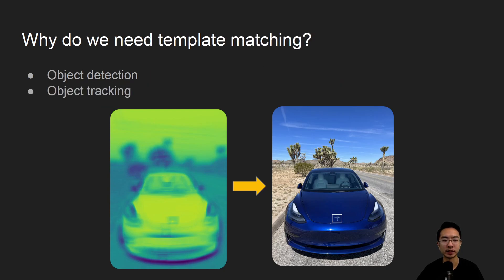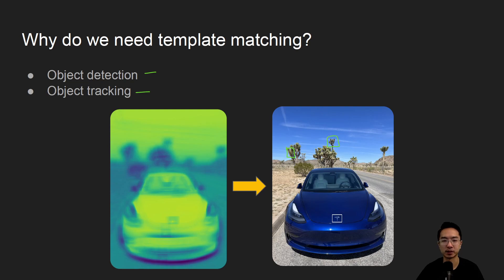So why do we need template matching? Some things it's good for are things like object detection or object tracking. In this case we're trying to track the Tesla logo. Maybe in some other instance you could be trying to track all the Joshua trees — that could be another application.